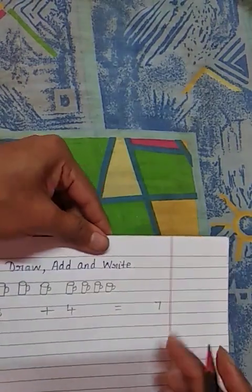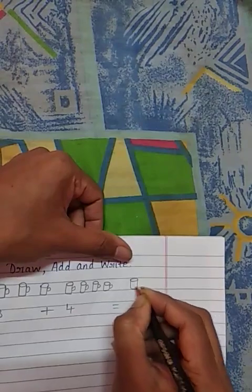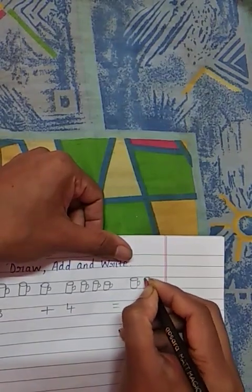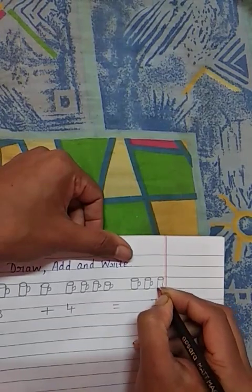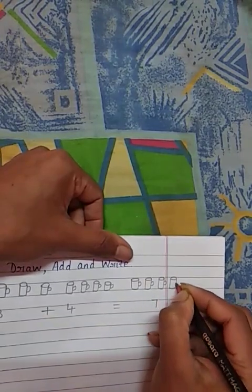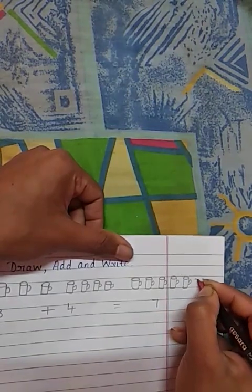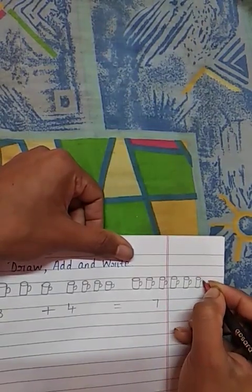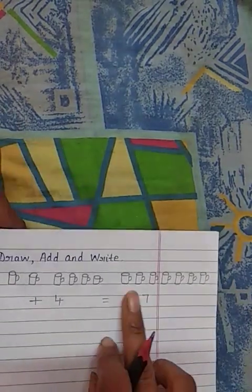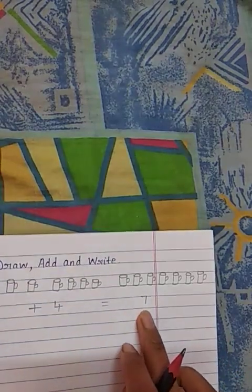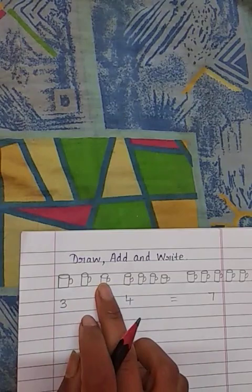So 7 mugs are there, so we will just draw here 7. 1, 2, 3, 4, 5, 6, 7. Right children, see, so 7 mugs have drawn. So draw, add and write is nothing but we itself will need to draw.